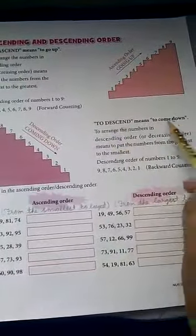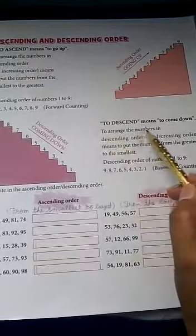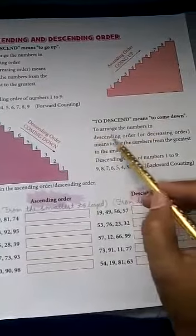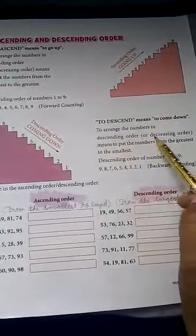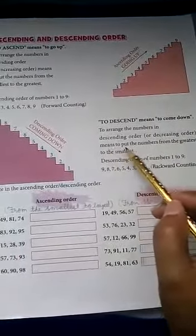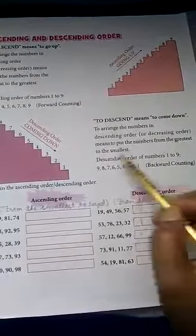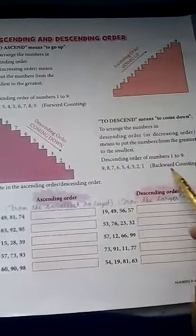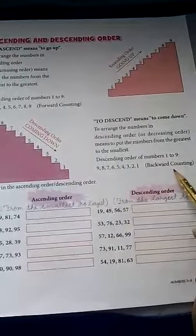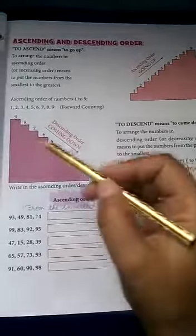Next, descending order. To descend means to come down. To arrange numbers in descending order or decreasing order—both are the same—means to put numbers from the greatest to the smallest according to backward counting.